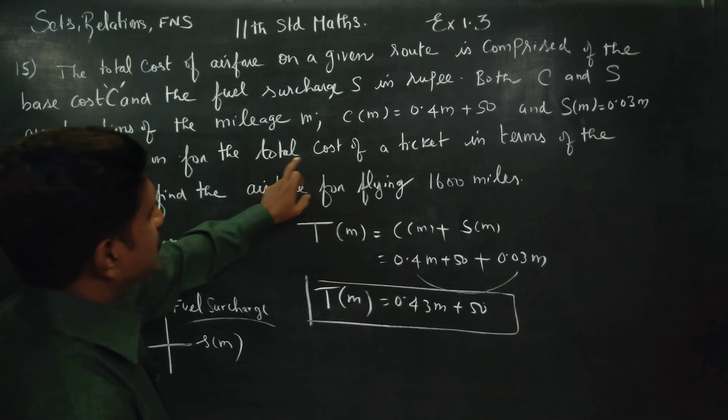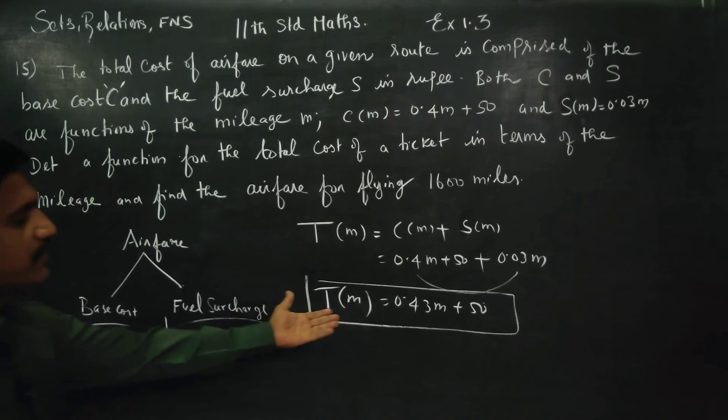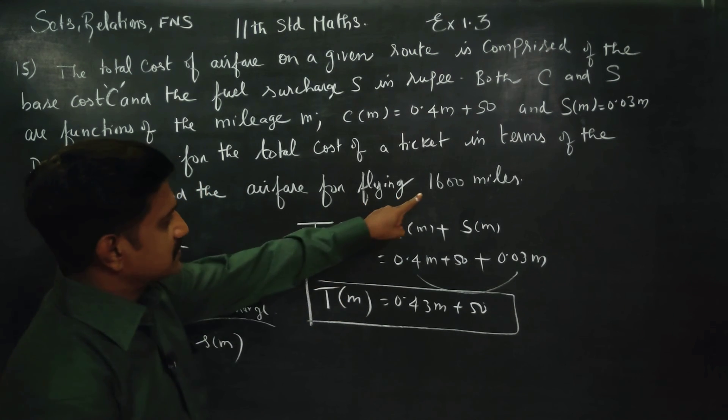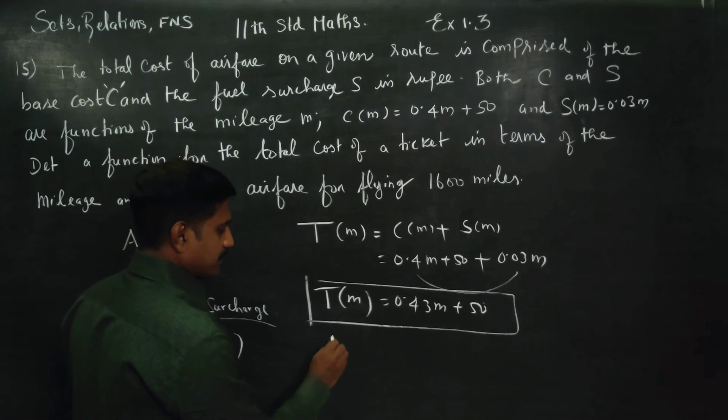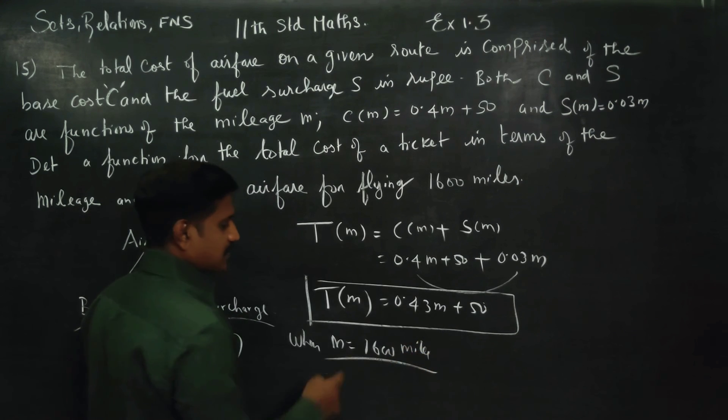First of all, we have to find the total cost of the ticket. This is the function T of M in terms of mileage. For 1600 miles, when M is equal to 1600 miles, we have to find the cost of the ticket.